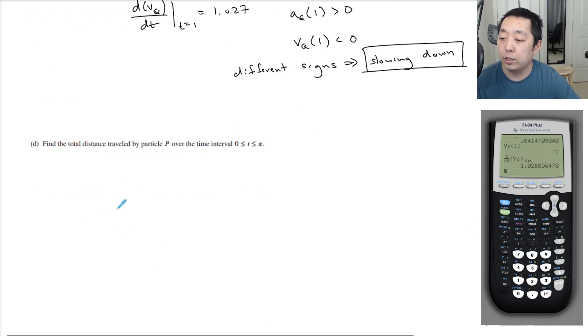Find the total distance traveled by particle P over the interval. Now when you do total distance, you're going to integrate from 0 to pi, but you're going to do the absolute value of it because they want distance, not the change in position. So we're going to do math function integral. We're going to go from 0 to pi.